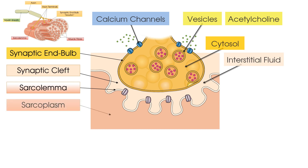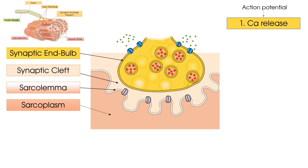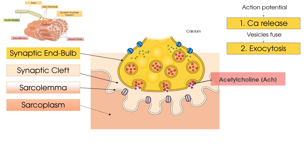Beneath the sarcolemma we have the cytosol of the muscle fibre, called sarcoplasm. The processes at the neuromuscular junction to create a muscle action potential and subsequent contraction can be split into five parts. Firstly, the action potential runs through the motor neuron reaching the synaptic end bulb, causing depolarisation. That depolarisation causes opening of the calcium channels and an influx of calcium into the synaptic end bulb. This influx of calcium leads to the vesicles fusing and releasing their contents — acetylcholine — into the synaptic cleft, which is called exocytosis.